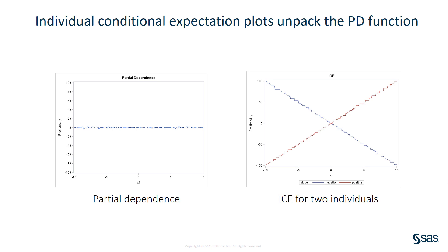As we've seen, PD plots give you a coarse view of how a model works. Another type of plot, the Individual Conditional Expectation Plot, or ICE plot, enables you to drill down to the level of individual observations. Here, a PD function and ICE curves for the same data set are plotted side by side. The essentially flat line in the PD plot suggests that there is no relationship between the plot variable x1 and the model's predictions. The ICE plot, on the other hand, shows that the relationship between x1 and the model's predictions actually differs for two individuals in the same data set — for one individual the relationship is strongly positive, and for the other it is strongly negative. Said another way, the ICE plot disaggregates the PD function to reveal interactions and individual differences.